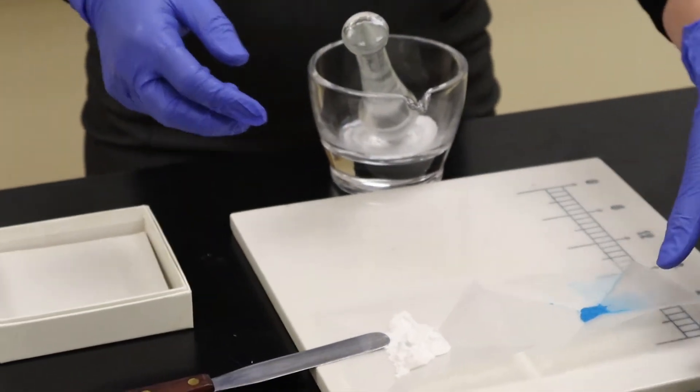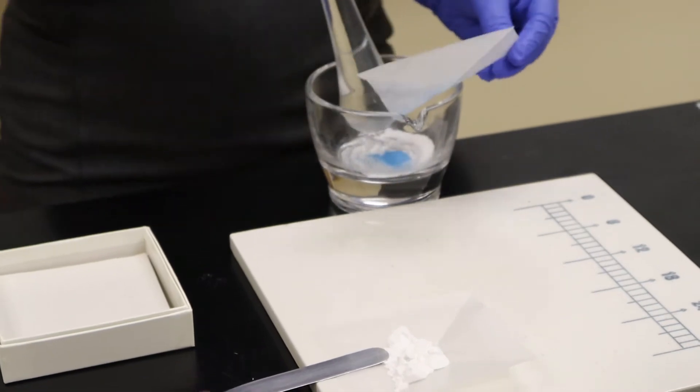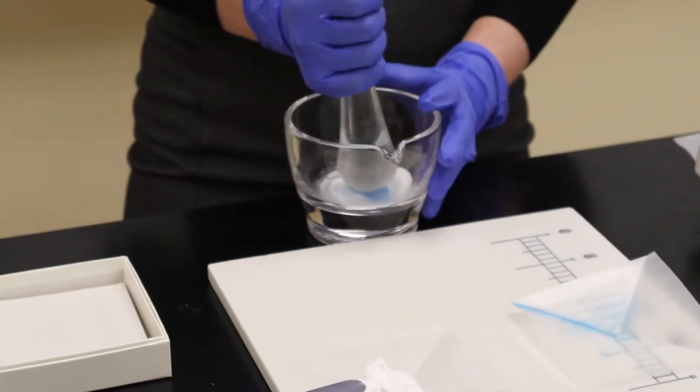Then I can continue on with my geometric dilution technique by adding in all of my mexiletine powder and triturating it together until I have a nice consistent blue color.